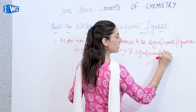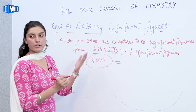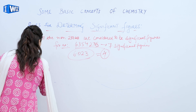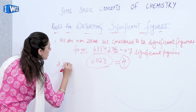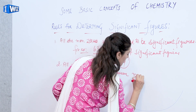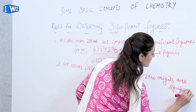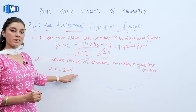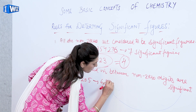From the Avogadro's number example, we get the second rule: all zeros placed in between non-zero digits are also significant. For example, take the number 300205. All the zeros between the non-zero digits are significant, so the number of significant figures is 6: 1, 2, 3, 4, 5, and 6.